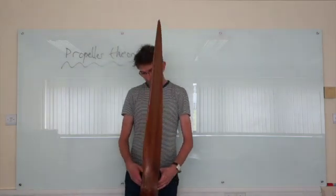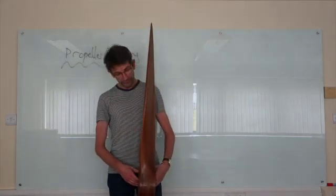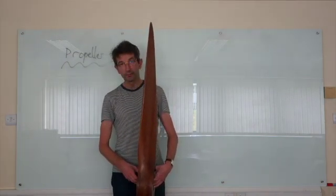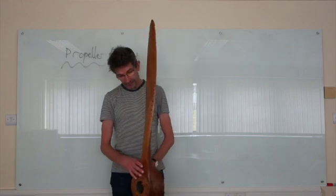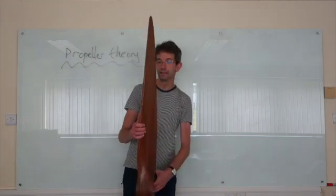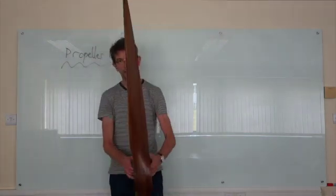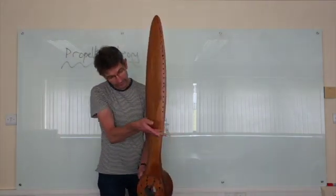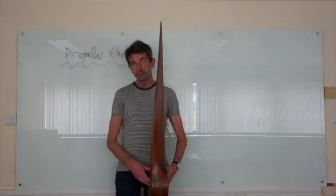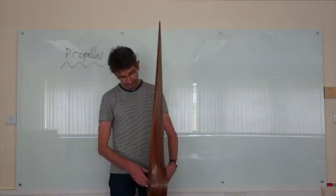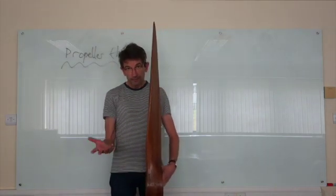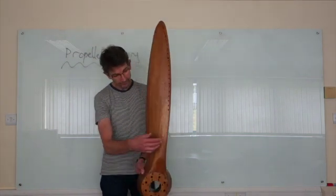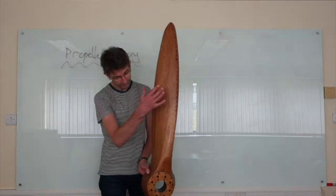This is a two-blade propeller. Propeller blades are designed to generate thrust as efficiently as possible. You can't really see the details of the blade sections just by looking at the propeller, but if I were to cut a slice across it, you would see an aerofoil section, much like a wing. The propeller generates thrust as an aerodynamic force.